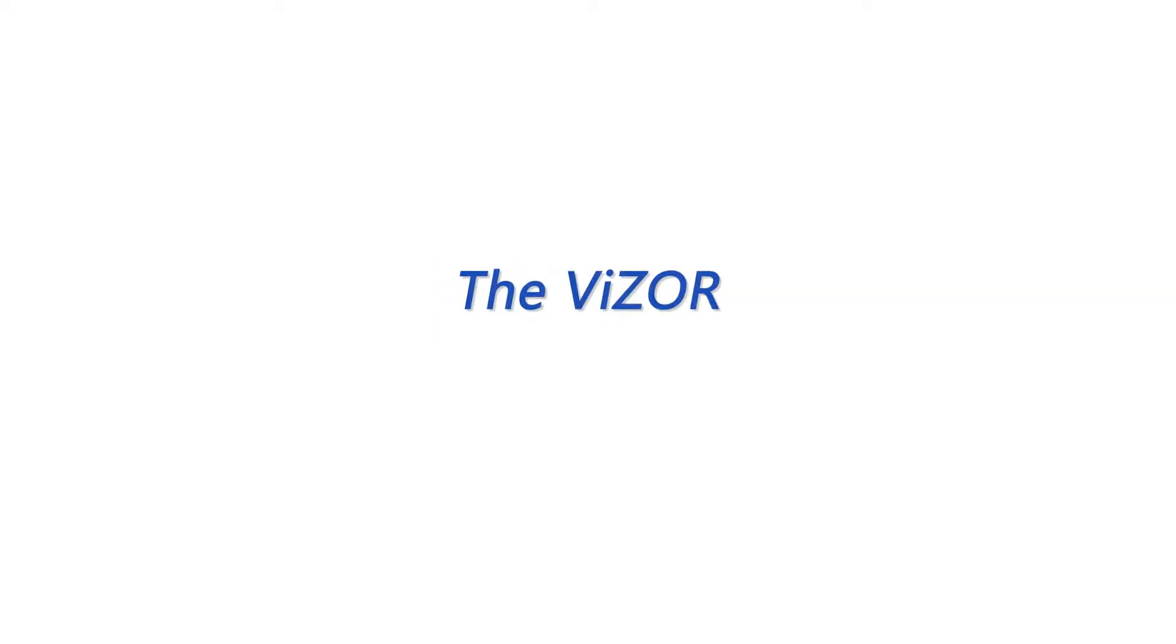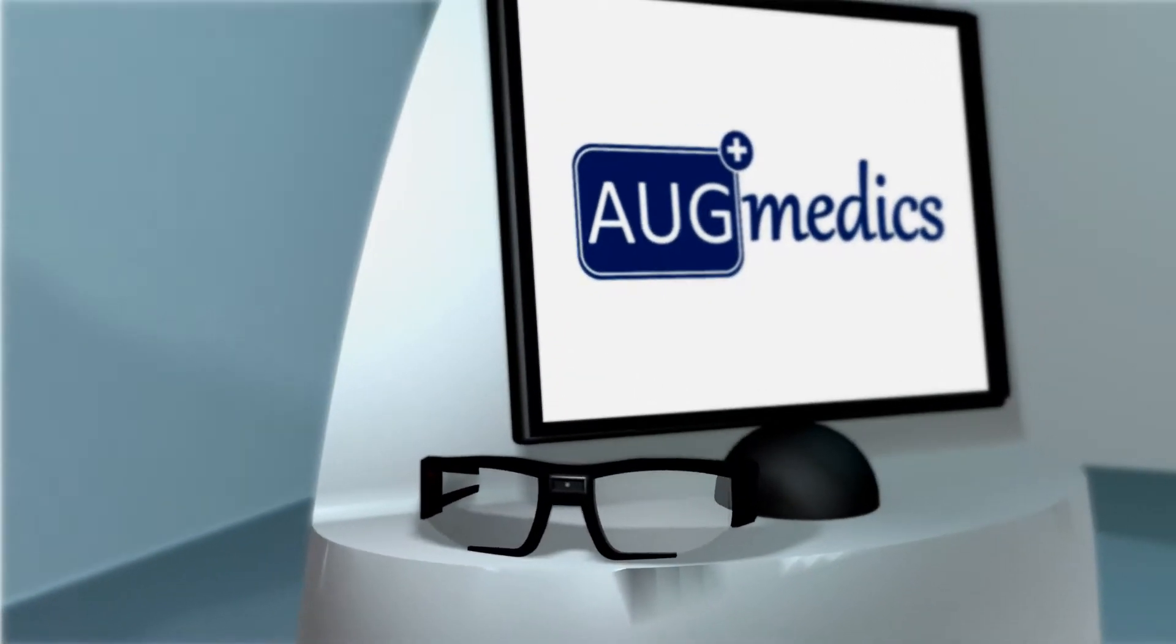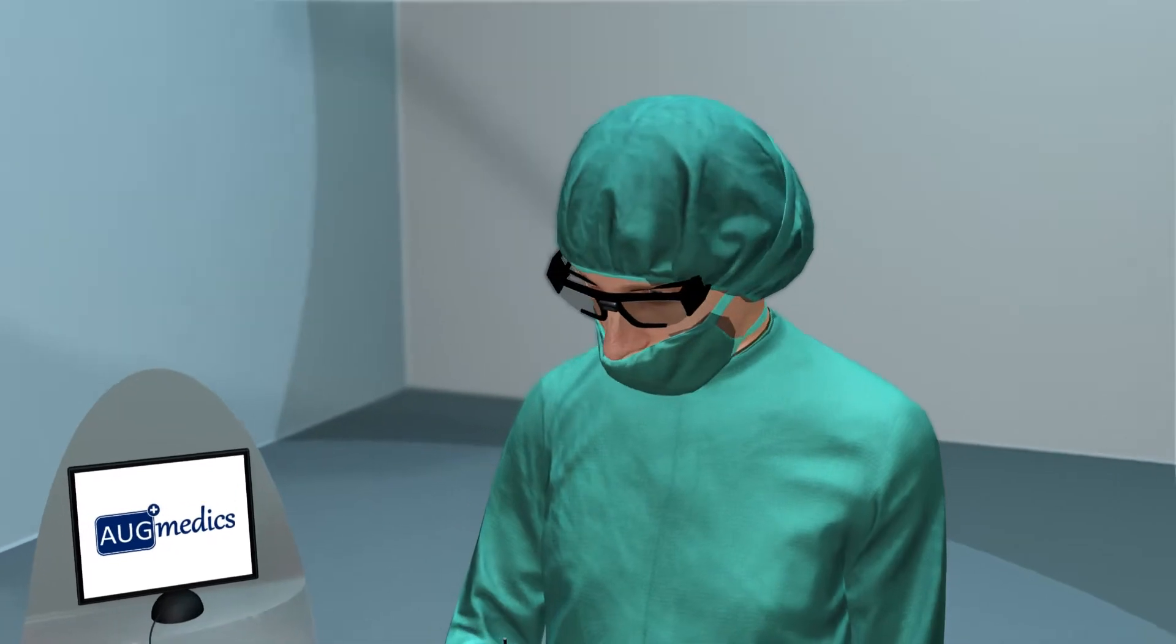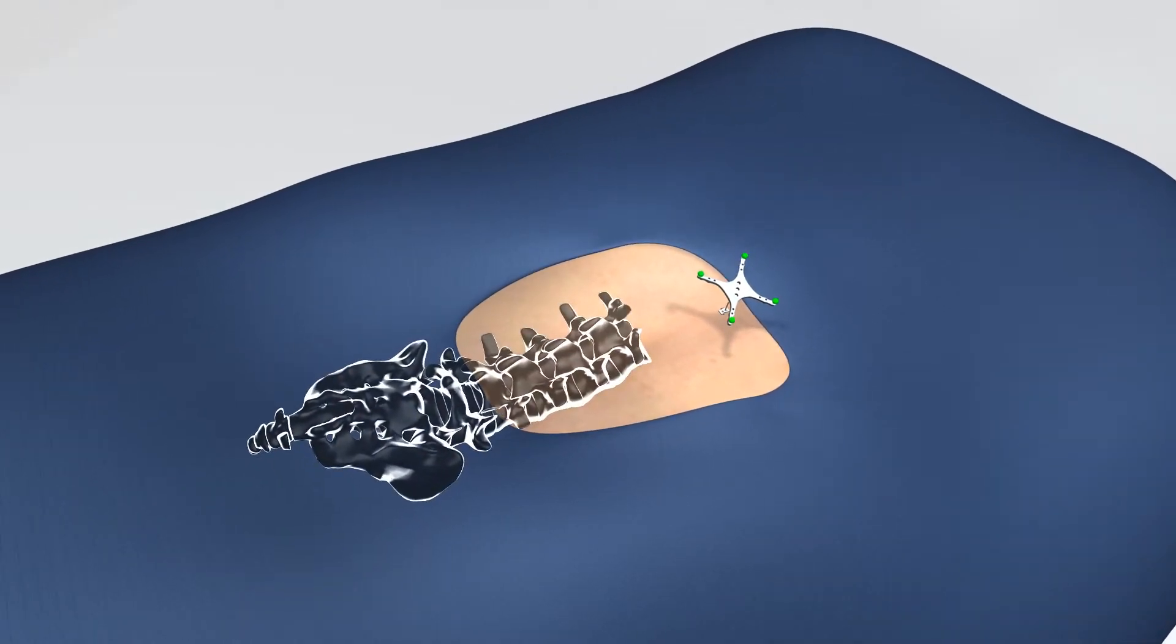Augmedix introduces the visor, an augmented reality head-mounted display for spine surgeries. The visor allows surgeons to see the patient's anatomy through skin and tissue, just as if they had x-ray vision.